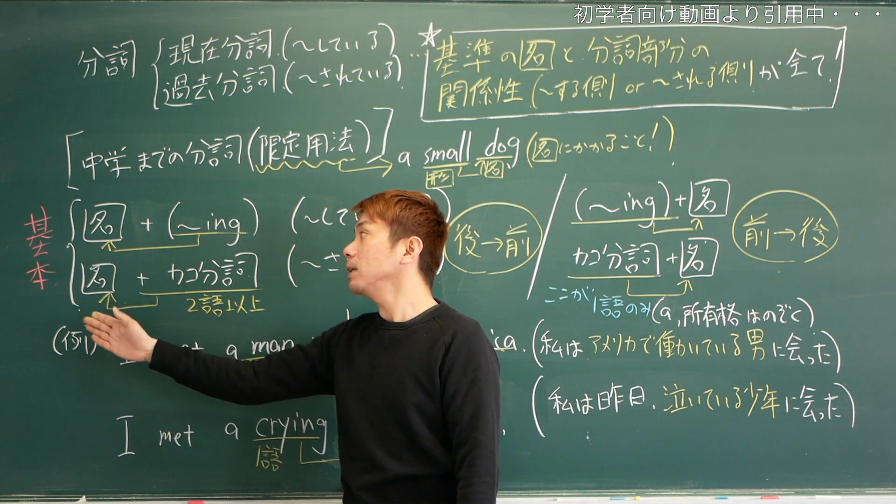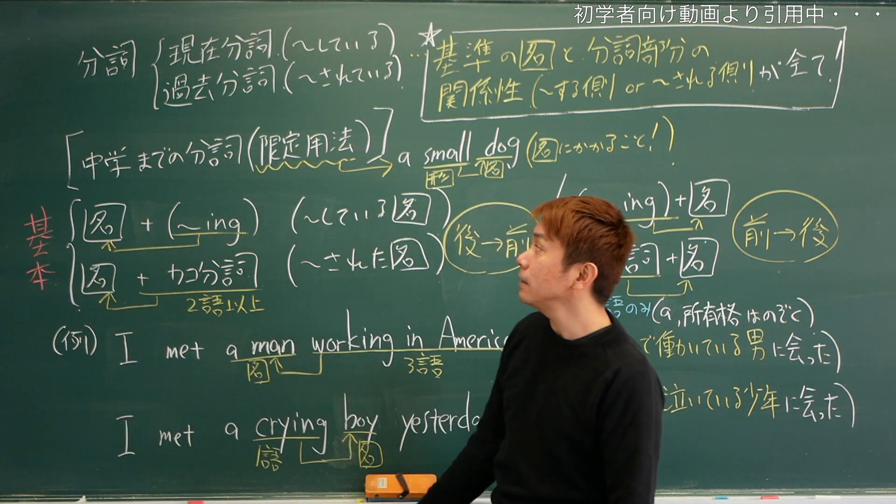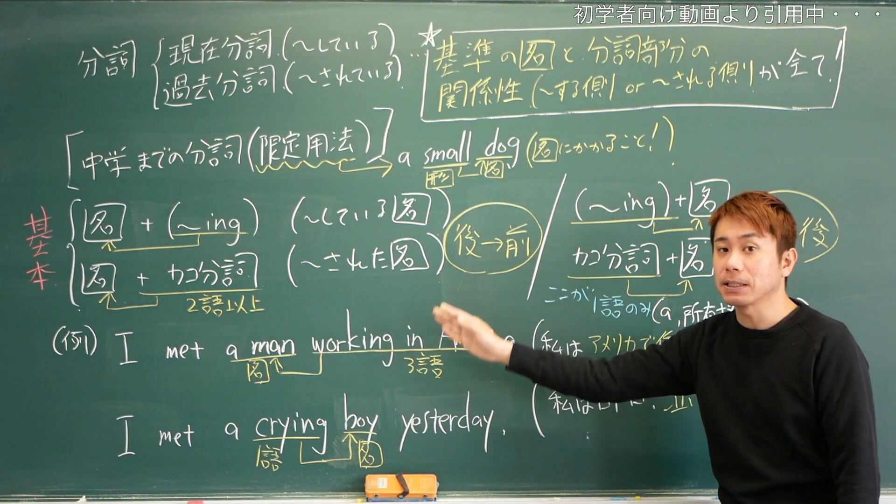置き方ですね。中学時代、これを基本で習ったと思います。後ろから前パターンでいい。実はこれ、この分詞部分の単語数が2語以上の時は、後ろから前にかけていました。この分詞部分の単語数が2語以上の時は、後ろから前にかけてあげてください。これが一番基本的な限定用法の置き方だと思います。